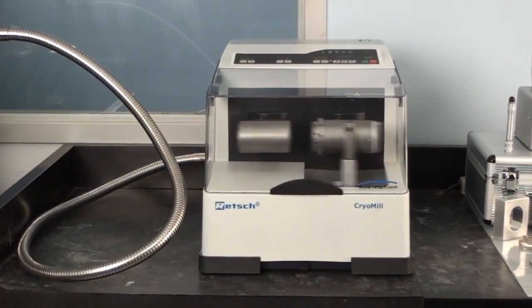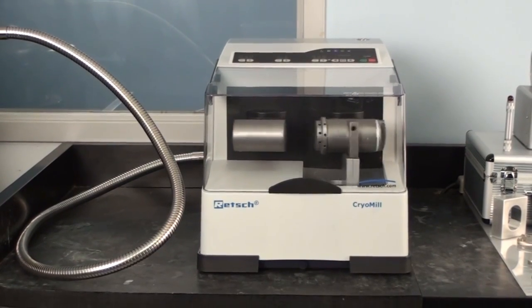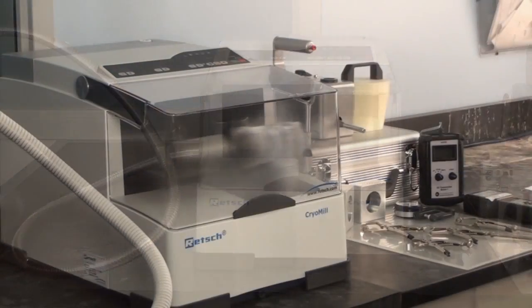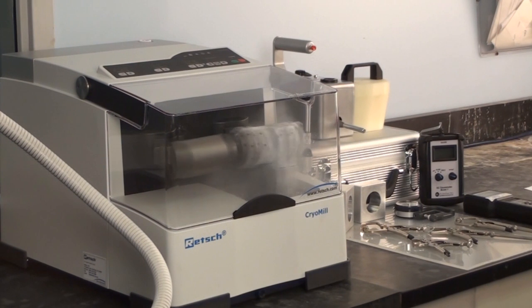He will then lock this vessel into the cryogenic mill which will have a five minute cool down period to bring your sample down to negative 196 degrees Celsius.